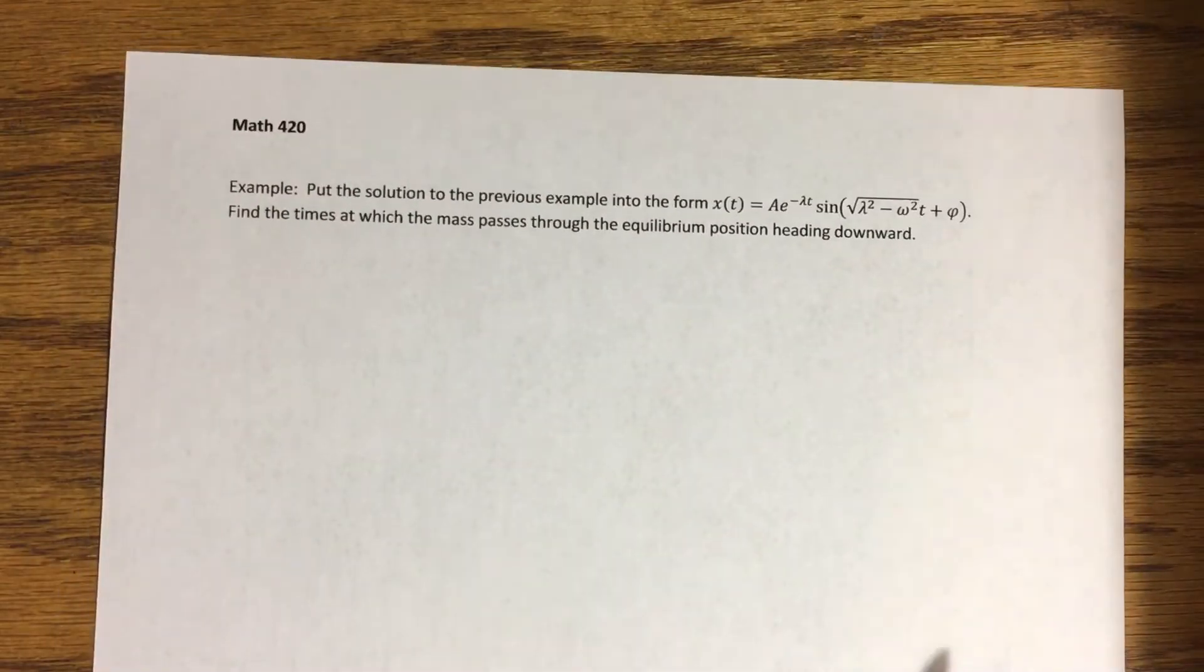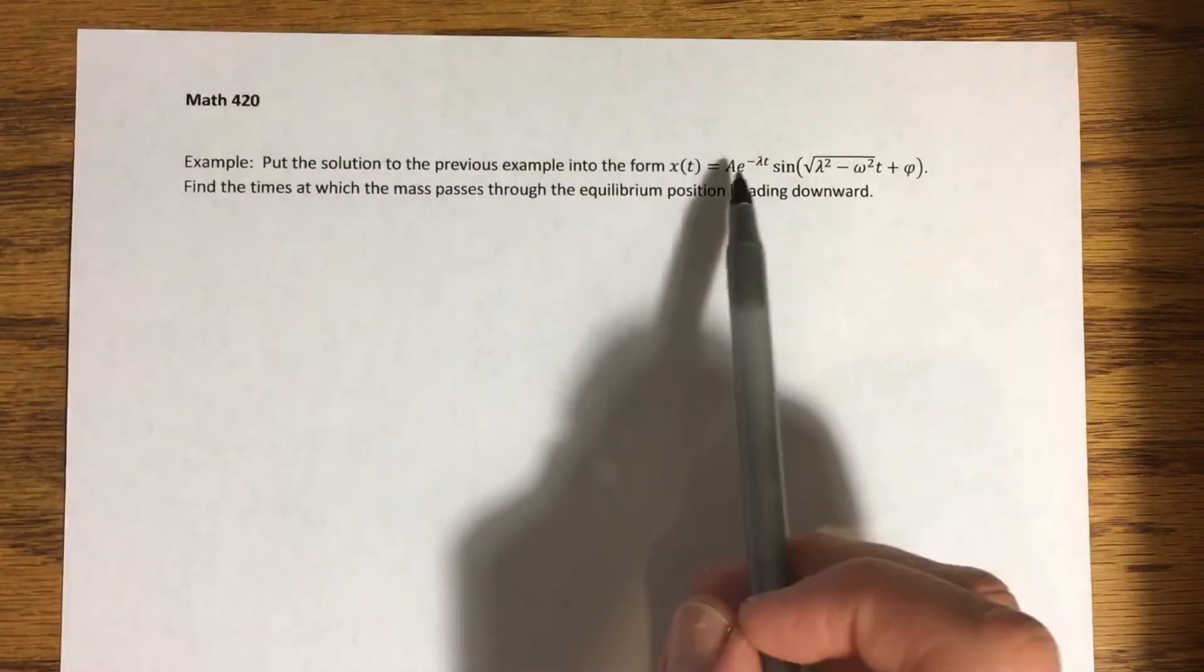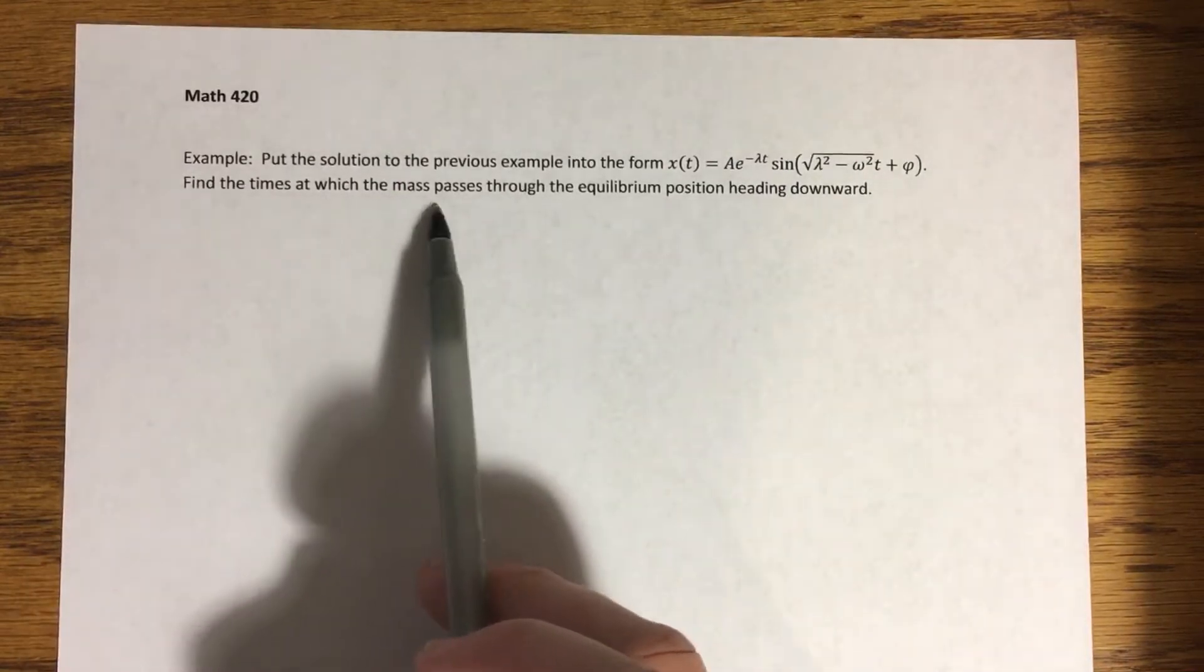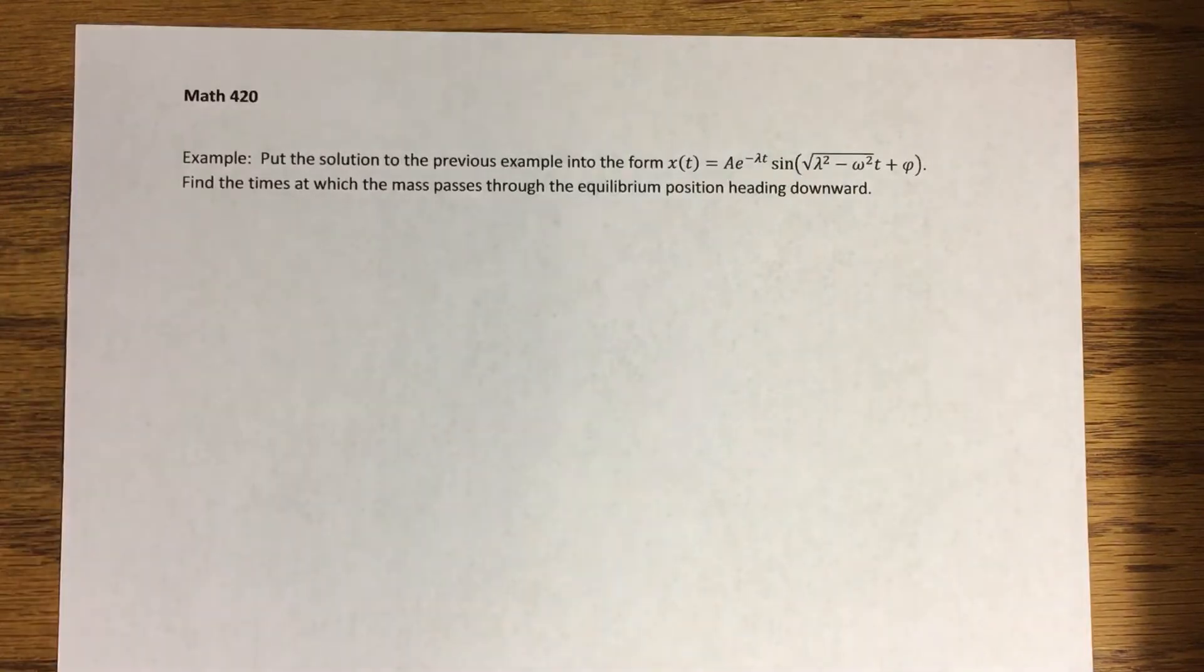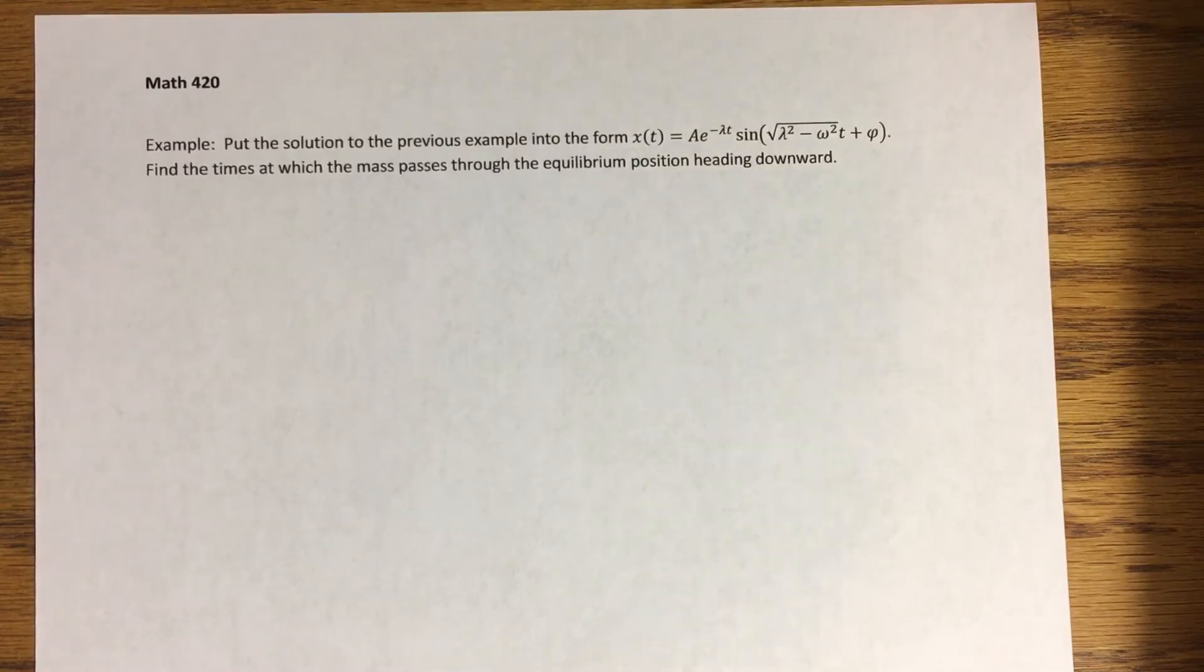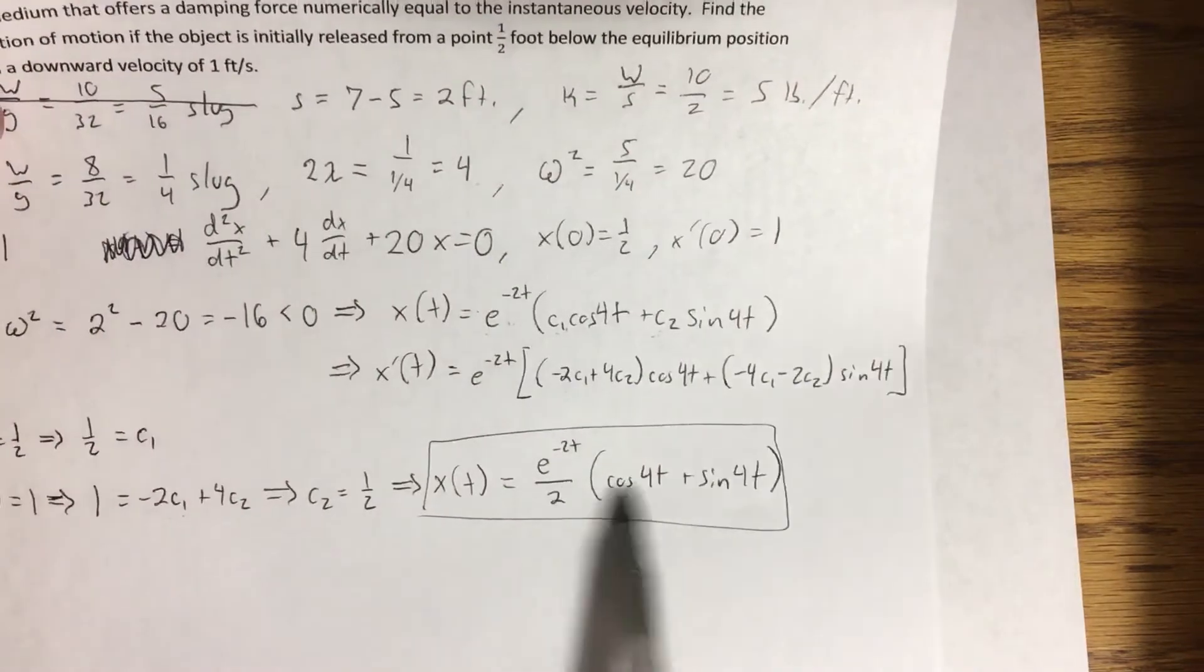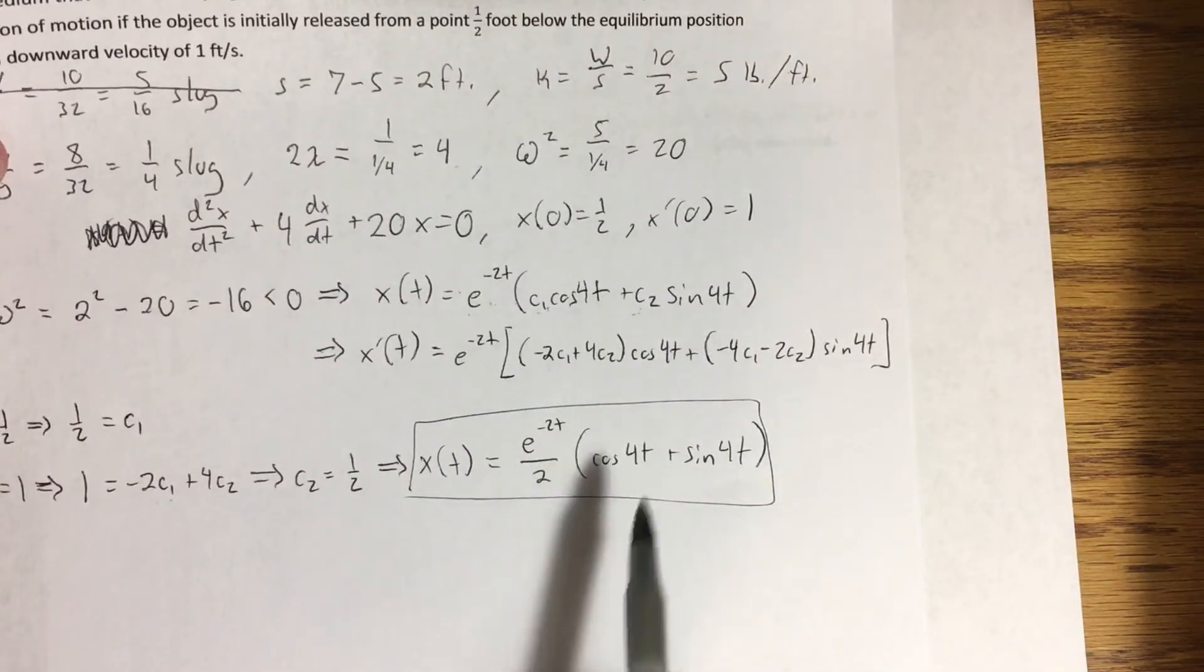Okay. So thinking back to our previous example that we did in the last video, we would like to take the solution that we found and put it into that form. And then using that, we'd like to find the times at which the mass passes through our equilibrium position, but heading downward. Okay. So let's take a look at that. Here's my previous solution. I have it right here.